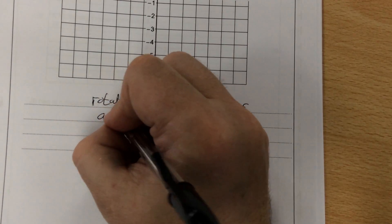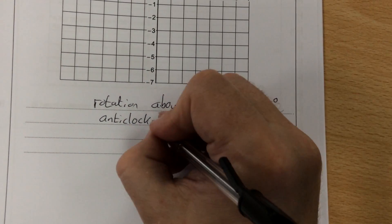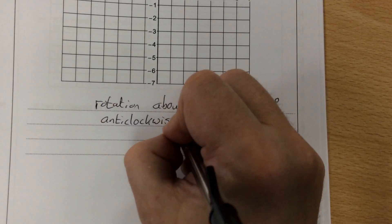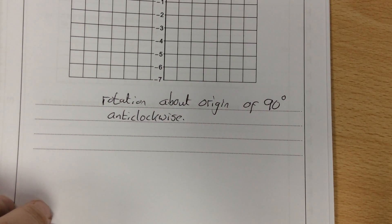Anti-clockwise, because it's gone against the direction of the clock, and 90 degrees. So 90 degrees, anti-clockwise. So it's an anti-clockwise rotation of 90 degrees about the origin.